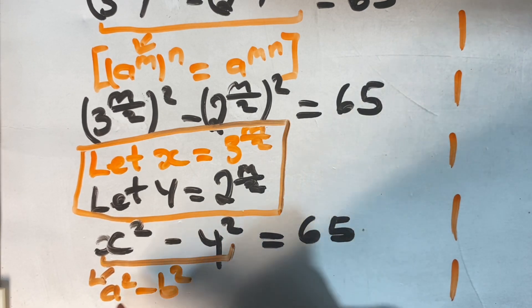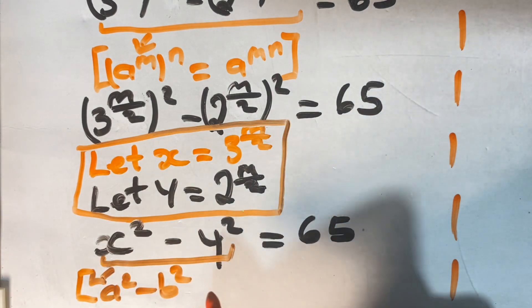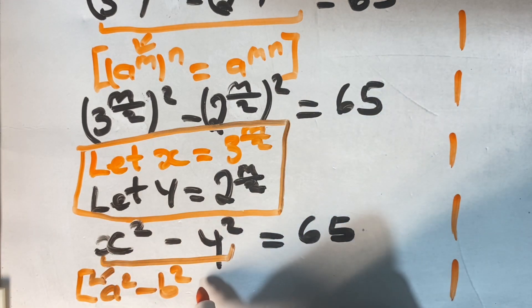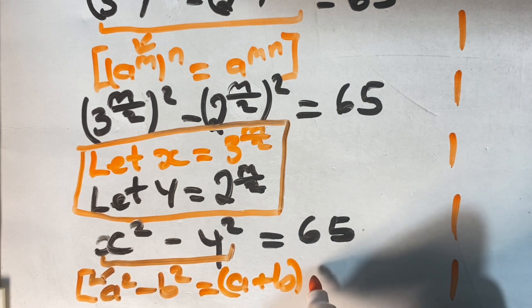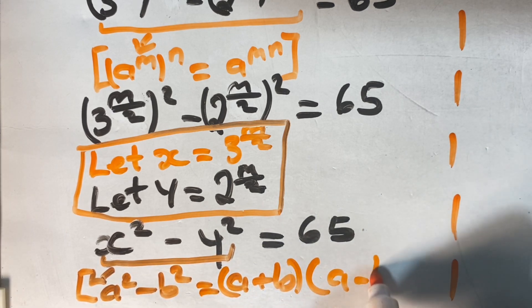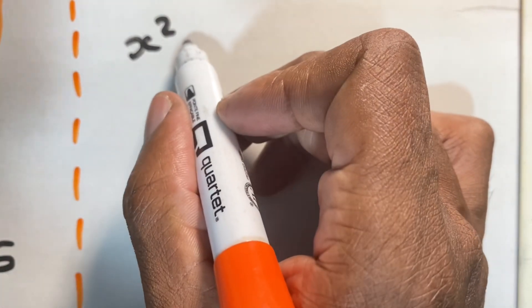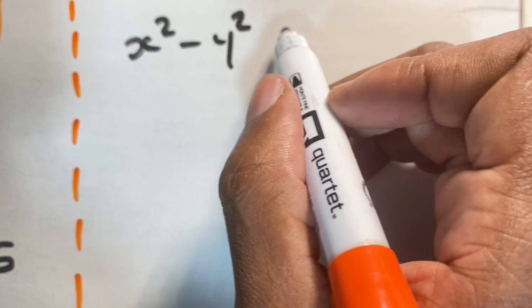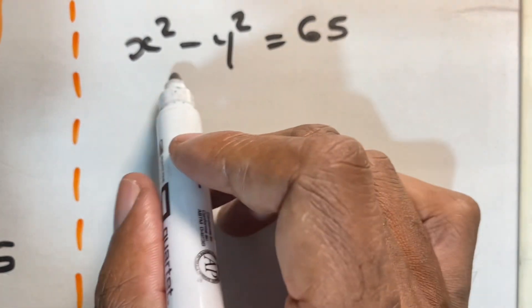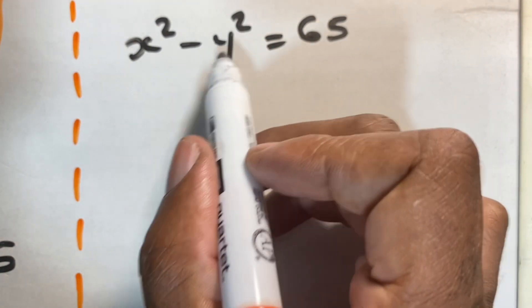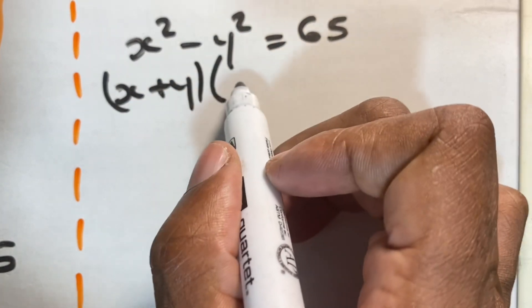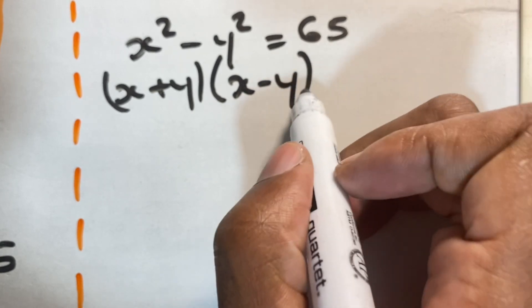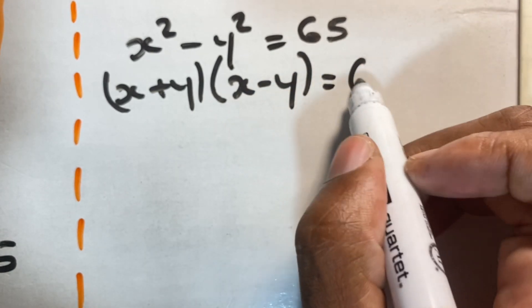Our rule states that if we have a squared minus b squared, we can simplify this as a plus b in one bracket, times another bracket where we have a minus b. We are going to apply that rule right here, so we're going to have x plus y in brackets, times another bracket where we have x minus y, and that is equal to 65.